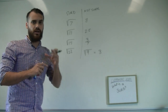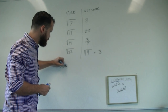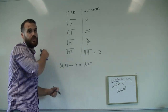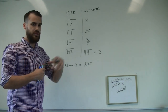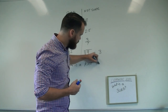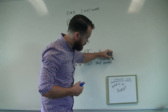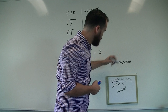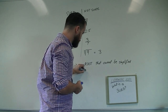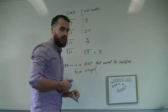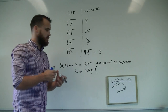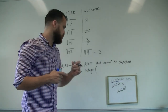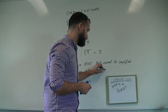Finally, let's give a formal definition. A SURD is a root — whether it's a square root, you'll learn about cube roots and fourth roots and fifth roots later on. A SURD is a root that cannot be simplified to an integer. Some of you already know what integers are, but in case you're not sure, an integer is just a whole number.